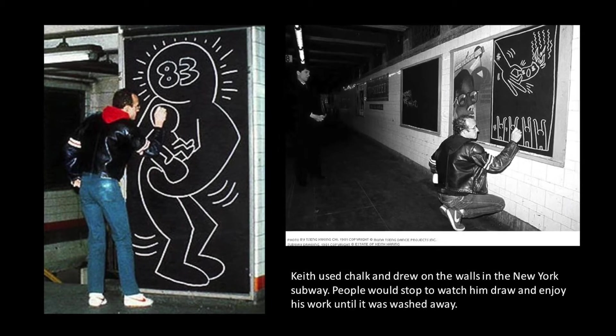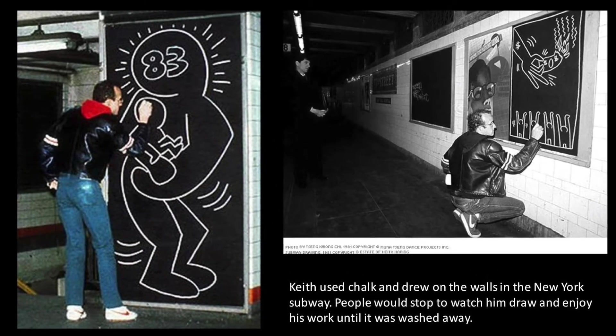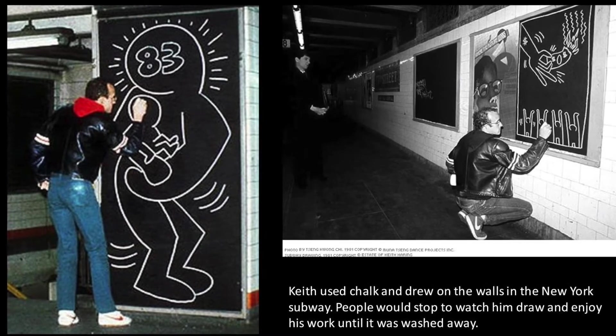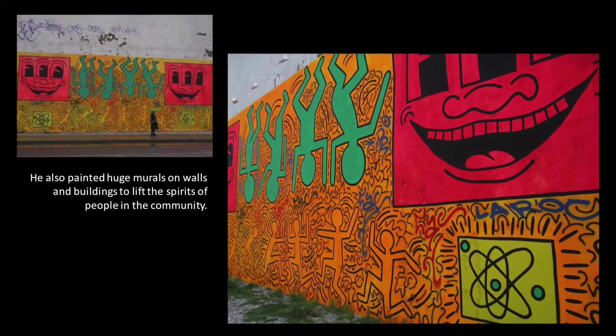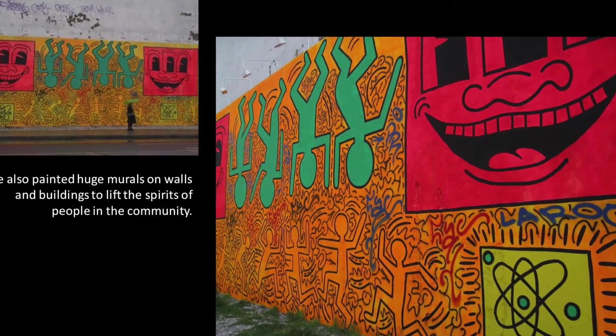Keith used chalk to draw on the walls of the New York subway. People would stop to watch him draw and enjoy his work until it was washed away. He also painted huge murals on walls and buildings to lift the spirits of people in the community.